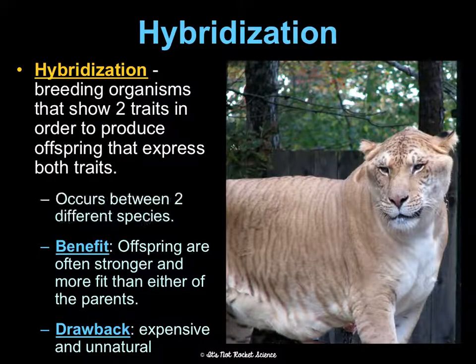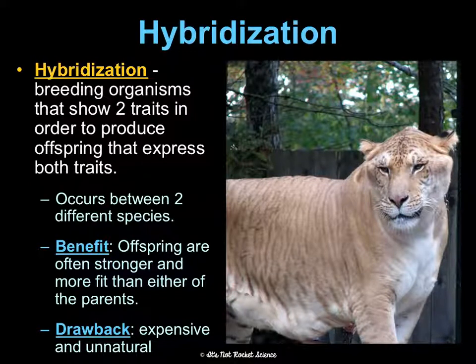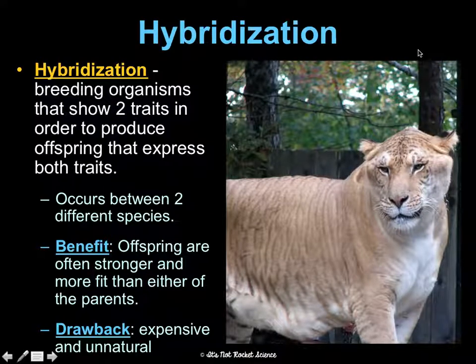Hybridization is breeding organisms that show two traits in order to produce offspring that express both traits, and this happens between different species. The benefit is the offspring are stronger and more fit. The drawback is it's usually expensive and a very unnatural process — making a liger from a lion and tiger is not a natural process at all.